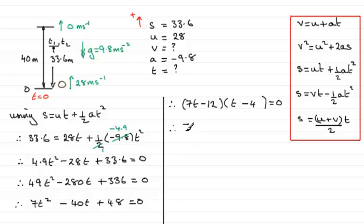So that means that, therefore, each of these factors must equal zero. So we've got 7 T minus 12 equals zero, or T minus 4 equals zero. And that's going to give us T equals 12 over 7, if we add 12 to both sides and then divide by 7, or T equals 4.